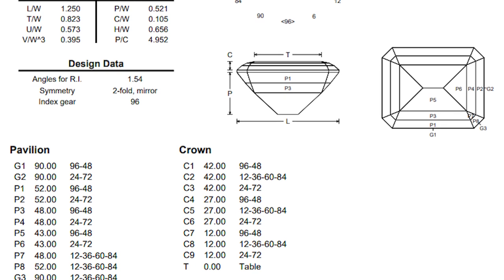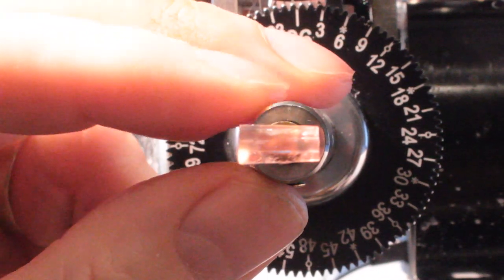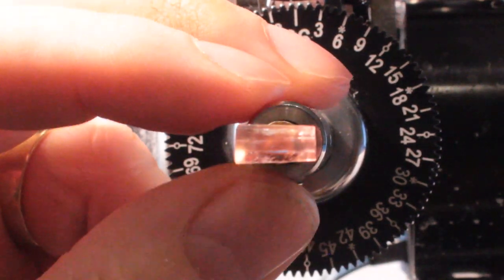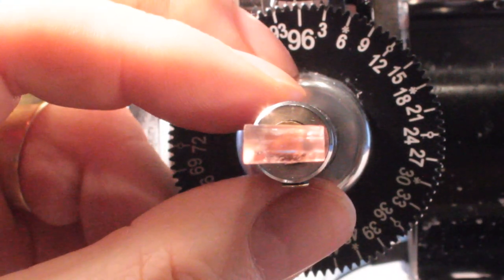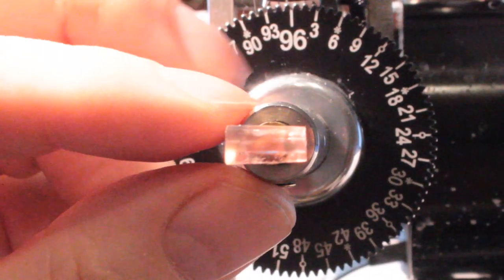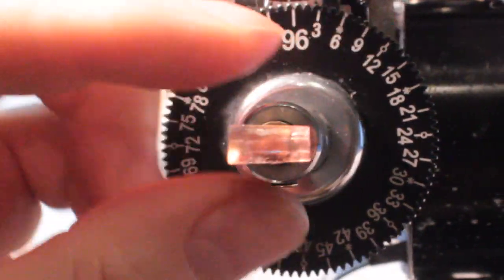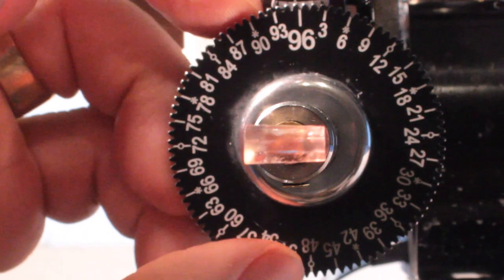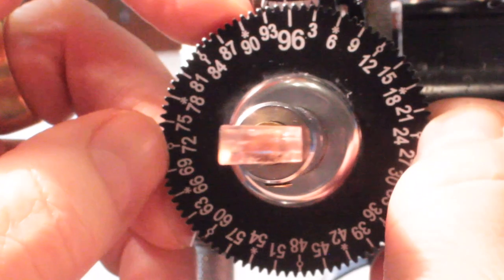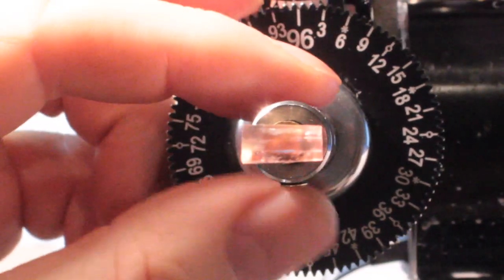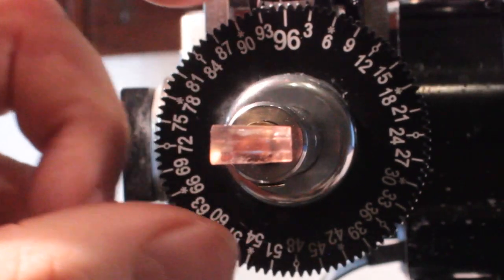For our pink topaz, it's small and it's already shaped like a rectangle. So I'm just going to use a standard emerald cut design. It goes into the Ultratech machine with the long sides at the 96 and the 48 and the short sides at the 24 and 72. We just lock it in place with the set screw and we're ready to start cutting our pink topaz.